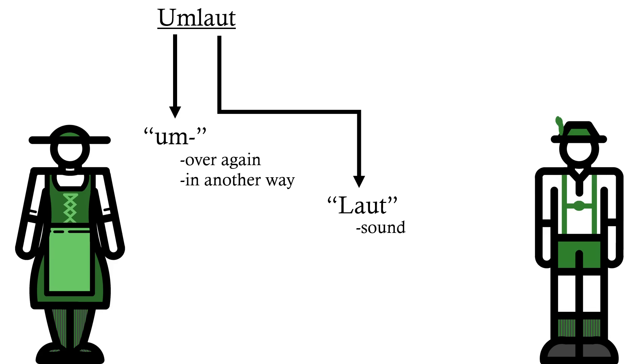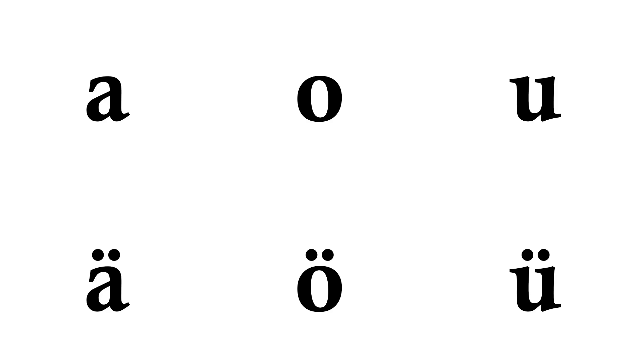An Umlaut is a sound in another way, and we can see this if we compare the three letters that can have an Umlaut in German with and without this accent on. Compare the words schon, meaning already, and schön, meaning beautiful, Mutter, Mütter. Did you hear that? The vowel sound changed with the addition of the Umlaut. There was a sound another way.